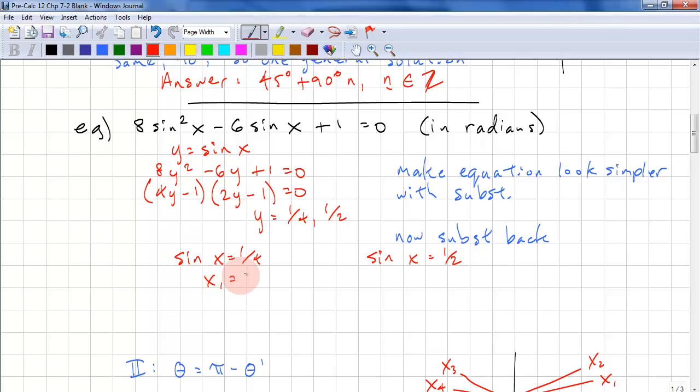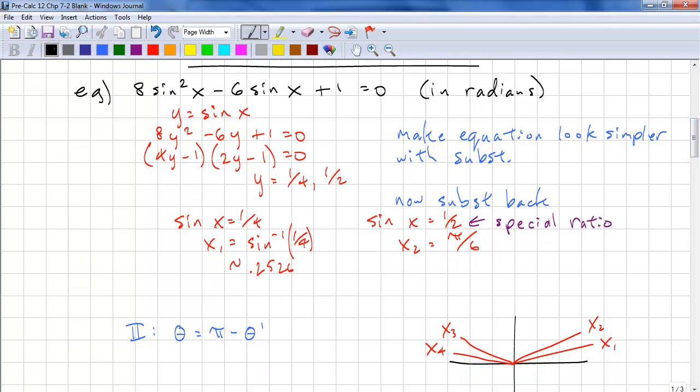So x1 equals inverse sine of 1 quarter. And that's approximately 0.2526. And x2 equals pi over 6. And let's look at a graph, a quick graph. We see that these two values are positive.